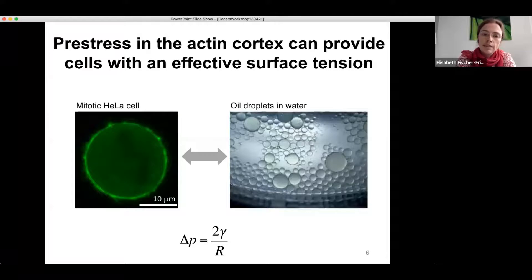Okay, so this pre-stress in the actin cortex actually provides the cell with an effective surface tension. So the concept of surface tension we know from colloidal droplets or oil droplets in water as shown here, and there the surface tension actually emerges from an interfacial energy that is associated to the water-oil interface. On the other hand, in the cell, it's due to the active contractile pre-stress which is there due to these active motor proteins. And the force balance at the periphery is captured by Laplace's law, which looks like that for the case of a spherical object. So the pressure excess inside is balanced by two times the surface tension divided by the radius of the sphere.